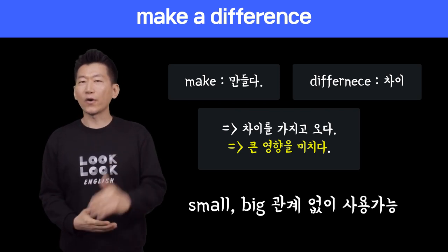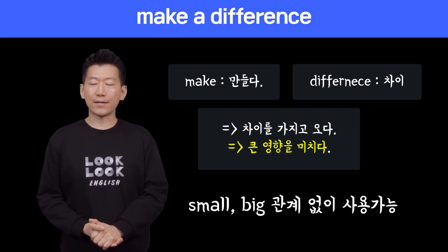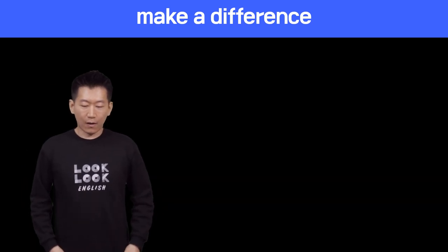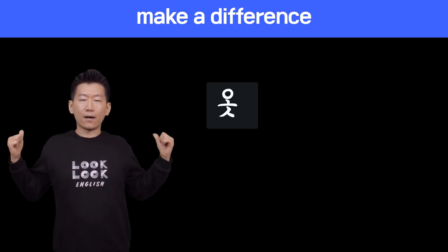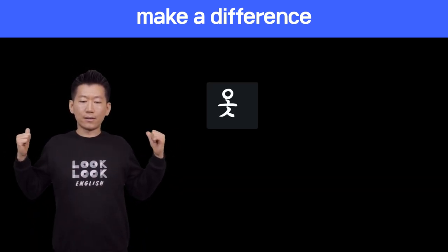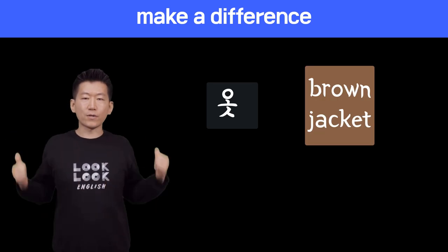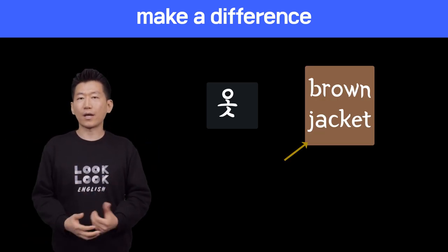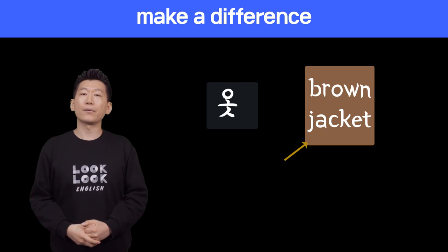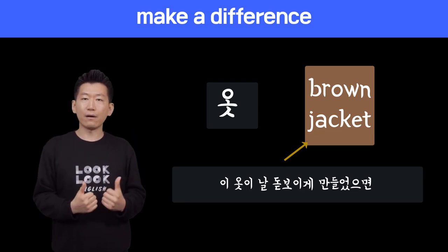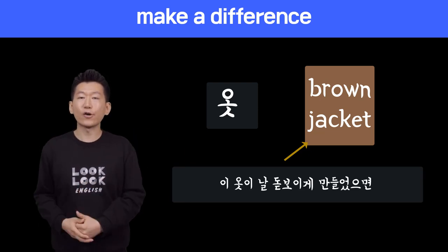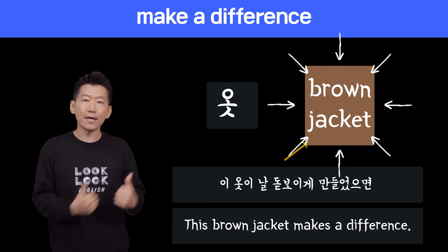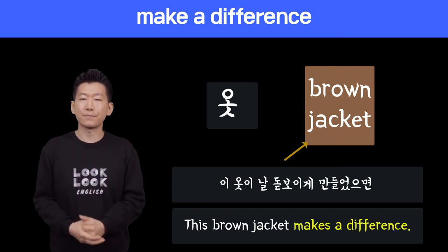그런데 꼭 큰 영향이 될 필요는 없어요. 아까 전에 이제 엘리옷이 설명한 것처럼, 옷을 이렇게 입고 있는데 여기다가 뭔가를 걸쳤어요. 그럼 이 걸친 게 저를 되게 돋보이게 만든다면, 그 자켓이 makes a difference 한 거에요. It makes a difference 라고 할 수 있겠죠? 그 자켓이 makes a difference. 이렇게 말할 수 있습니다.